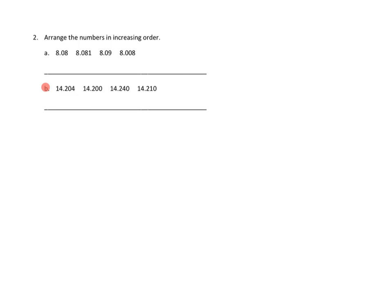So, 14 point two zero four, 14 point two zero zero, 14 point two four zero, and 14 point two one zero. Okay. So, I know that the first three place values that I'm looking at, the tens, the ones, and the tenths, those are the same on all three of these numbers. So, the next thing I'm going to look at is I'm going to look at the hundredths place. This one doesn't have any hundredths. This one doesn't have any hundredths. And these other two, they have some hundredths. And actually, so I'll leave those aside, right? Those are not my smallest numbers. And the question is, which of these two is smaller?